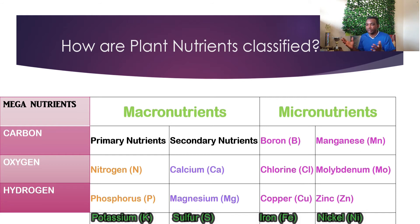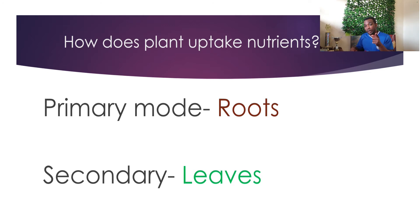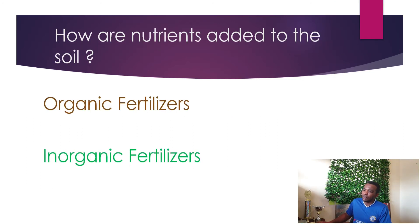How do plants uptake nutrients? Plants uptake nutrients primarily through their roots. However, they can also take in nutrients through their leaves through structures that we call stomata.